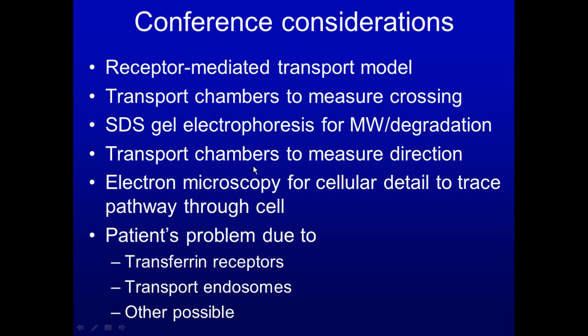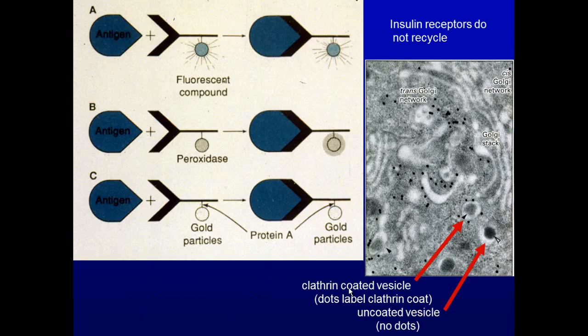Transport chambers also measure direction of flow — does transport go basal to apical or apical to basal? You place material in one chamber and measure in the other. Electron microscopy is used to study the cellular detail of the pathway. When cell-mediated transport occurs, a ligand binds to the receptor, is internalized, and is followed through to the other side. Finally, a patient problem is presented: is the inability to use transferrin due to a transferrin receptor or transport endosome defect?